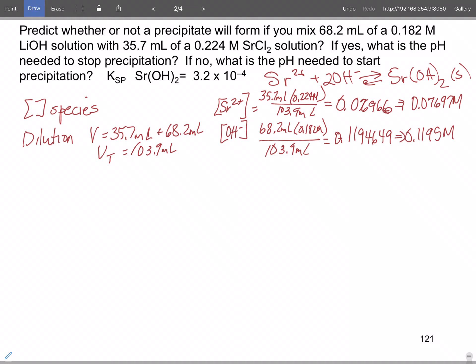So now that we have the concentrations, the question is whether precipitate forms or not. So the first way to do this is as a Q problem. Q is going to be equal to the strontium times the hydroxide squared.